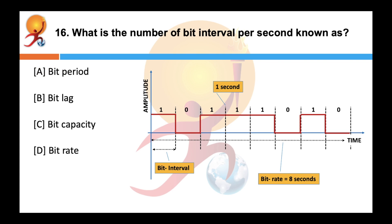What is the number of bit intervals per second known as? Answer is bit rate. This means that bit rate is the number of bits sent in one second, usually expressed in bits per second.